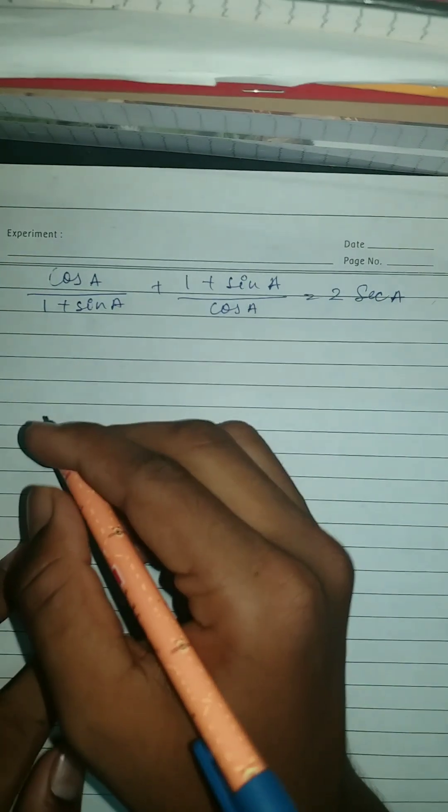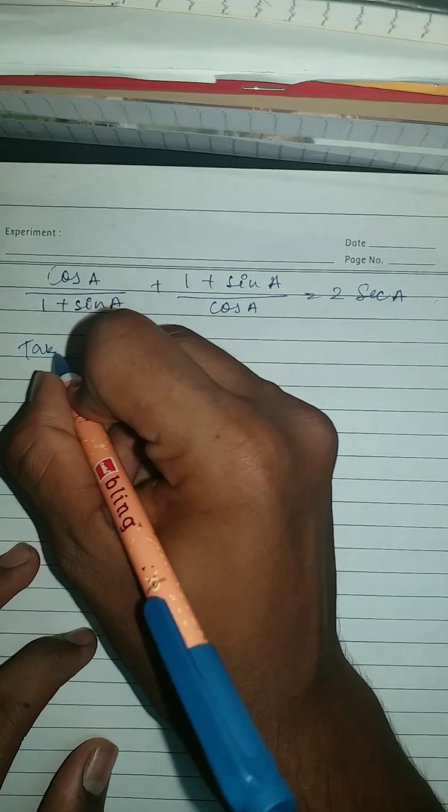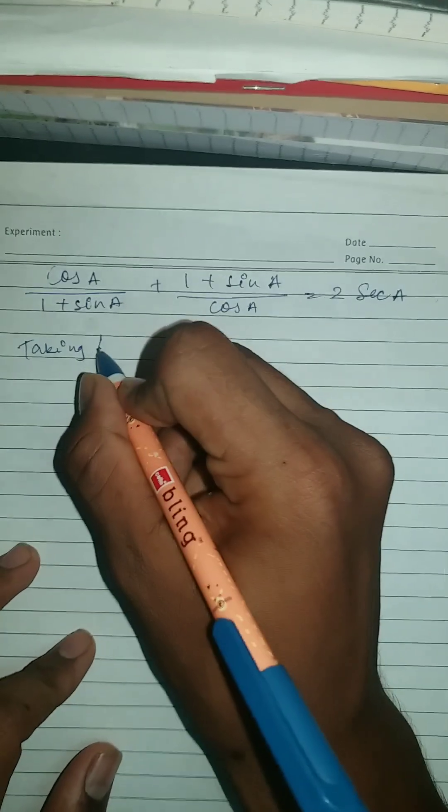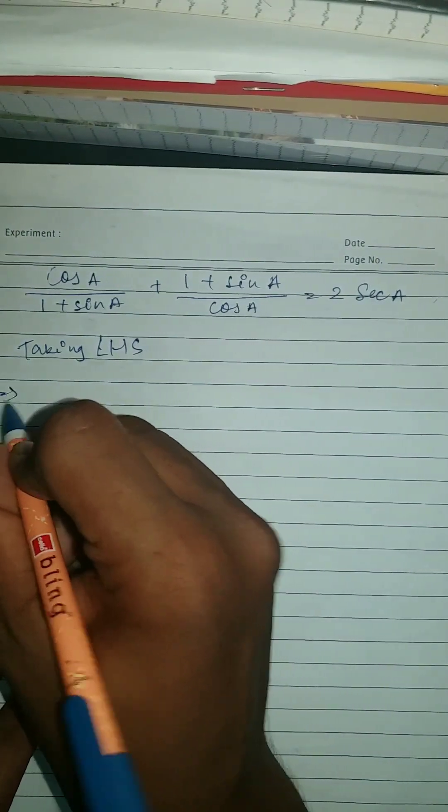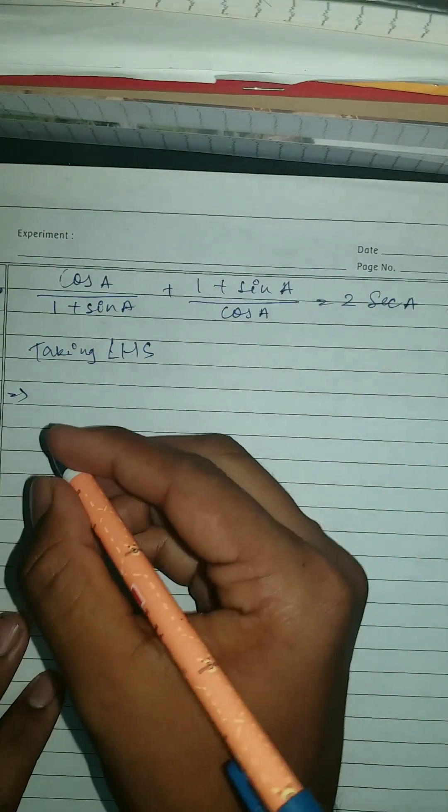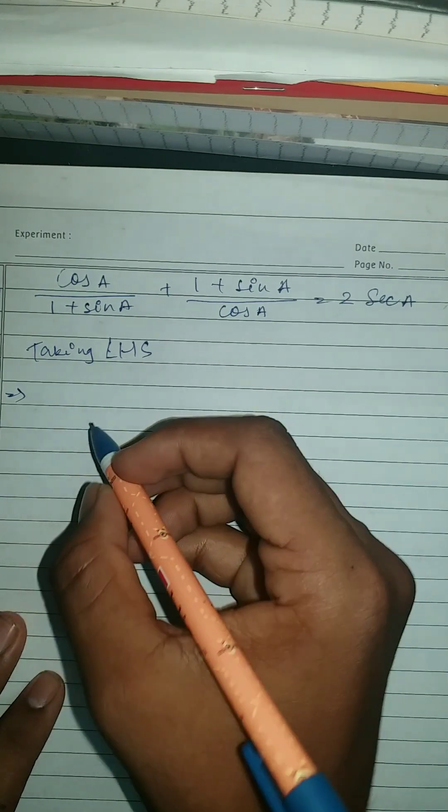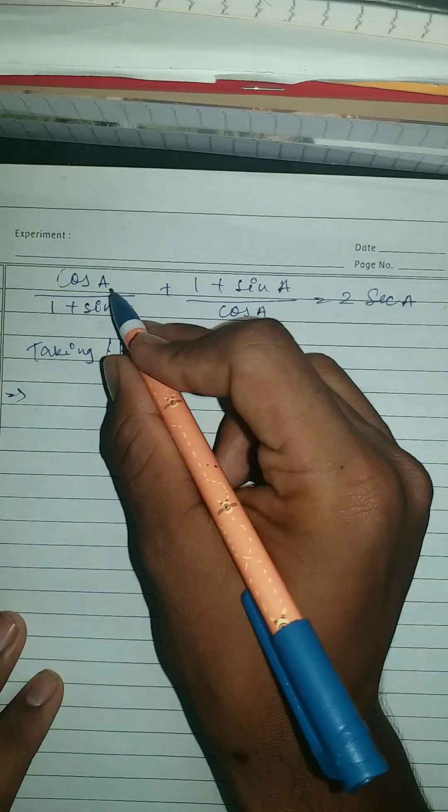So here we're gonna take LHS. So let's write this, taking LHS. So here what to do, as you can see right here. So by taking LHS what we got, we are going to do cross multiplication.